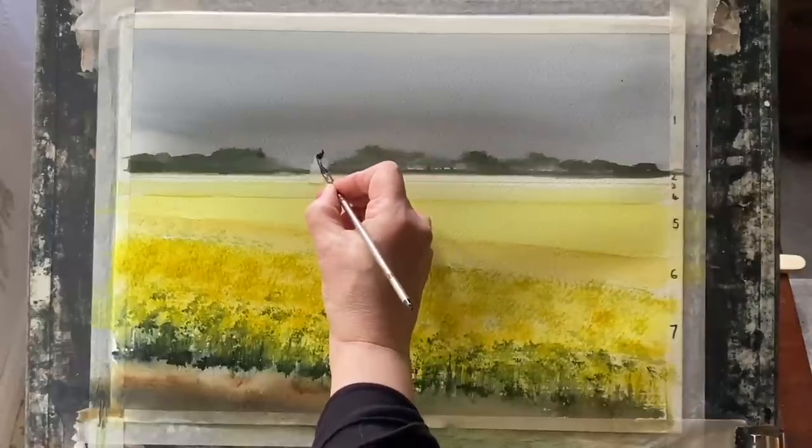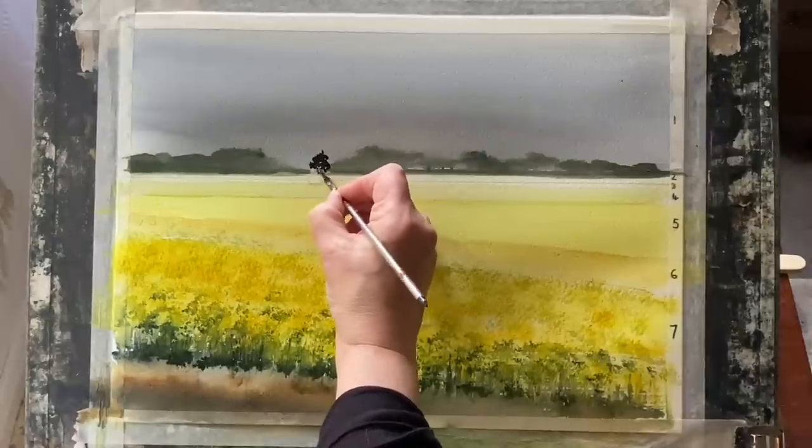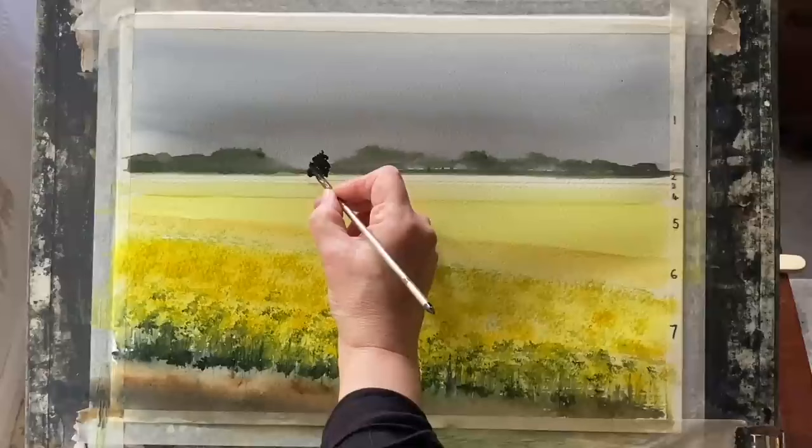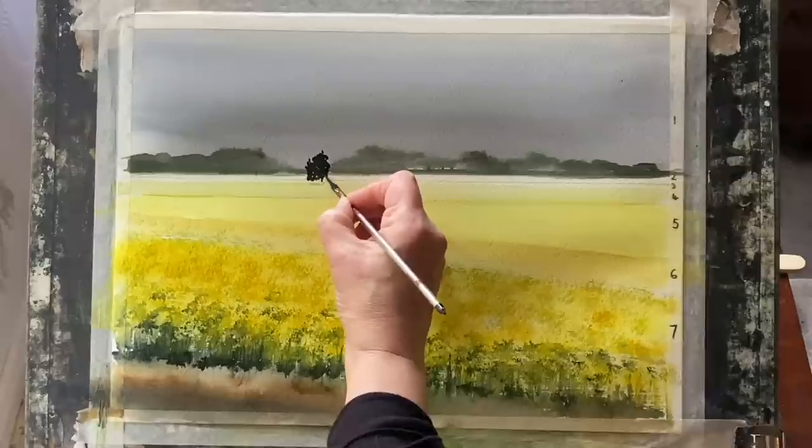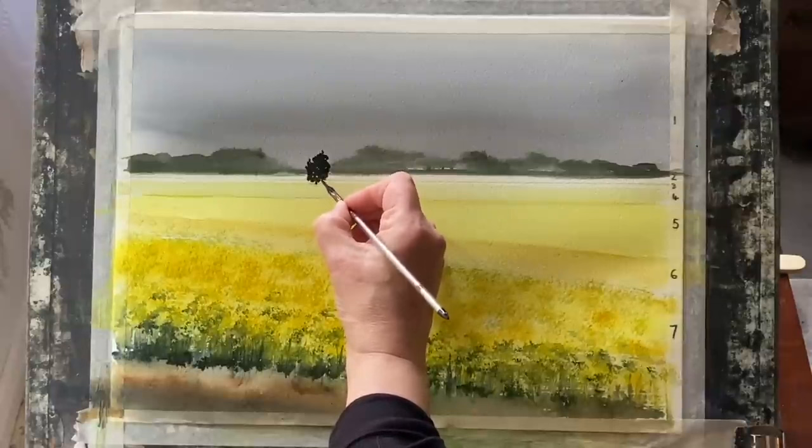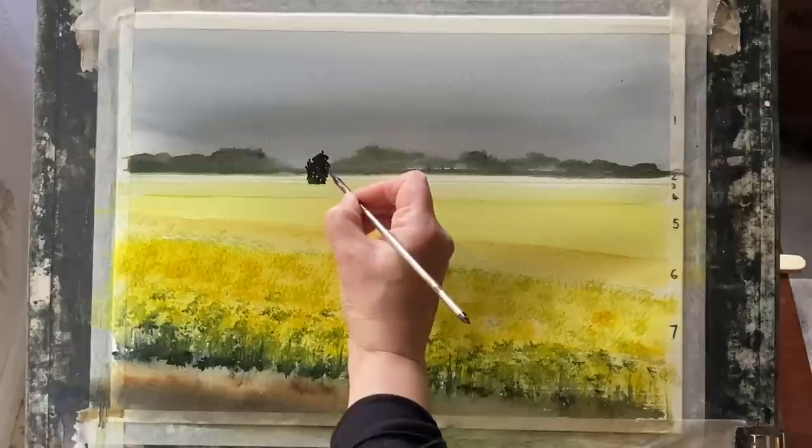Now with my small calligraphy brush and almost neat perylene green, I'm putting in my focal point tree, bringing it down just a little bit lower than the horizon line so that it looks as if it's quite a bit further forward. This is something that will really help to give us that sense of depth of this field.